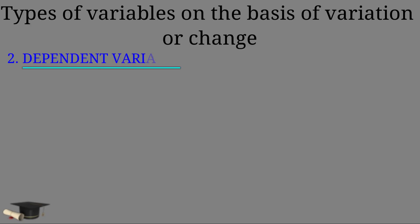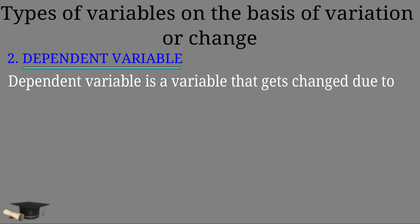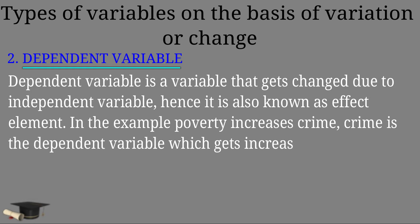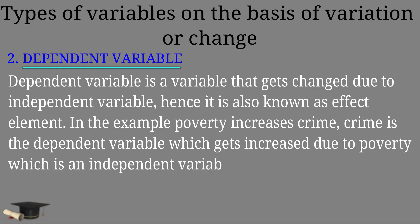Number two, dependent variable. Dependent variable is a variable that gets changed due to independent variable. Hence, it is also known as effect element. In the example, poverty increases crime, crime is the dependent variable which gets increased due to poverty, which is an independent variable.